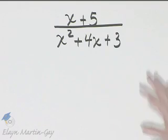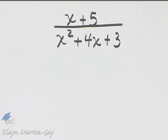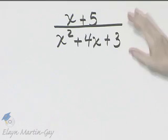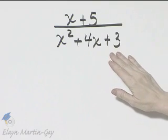I'd like to find any numbers for which this rational expression is undefined. Remember, it will be undefined when the denominator is zero.